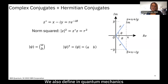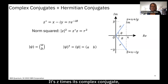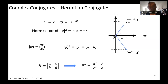In quantum mechanics and quantum computing we define the norm squared, which is the magnitude of z squared — equal to z times its complex conjugate, also equal to r squared. This must always equal one when we sum up all components of the state we're describing.